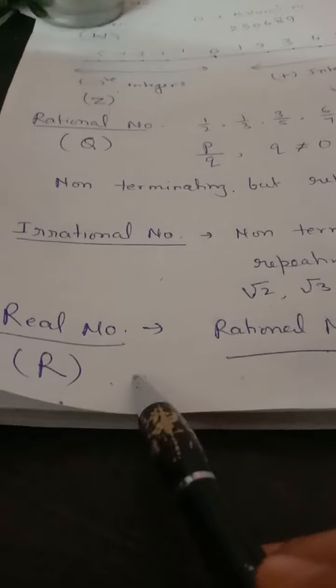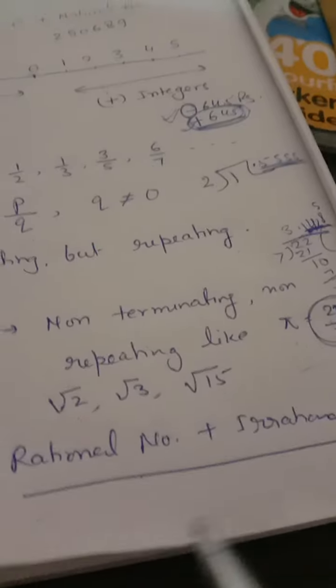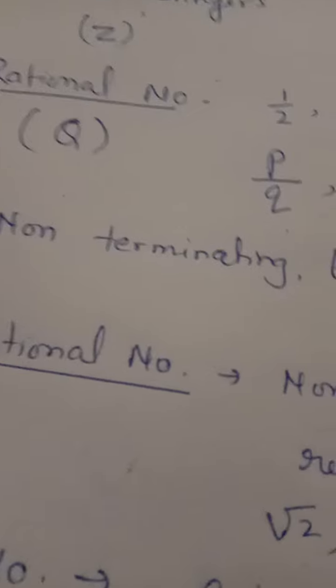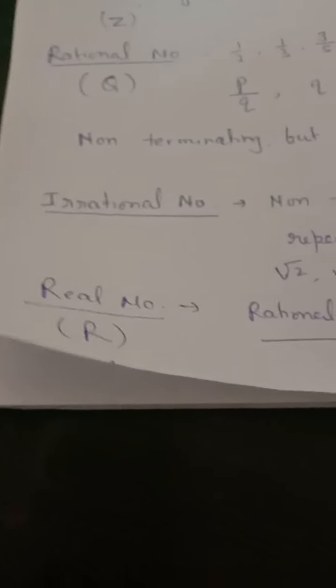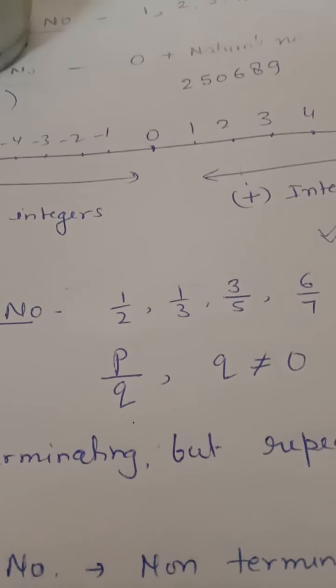Now we come to real numbers. Those numbers are real numbers which combine rational and irrational numbers both. When we mix rational and irrational numbers together, we get real numbers. Now I have completed my number system. Thank you.